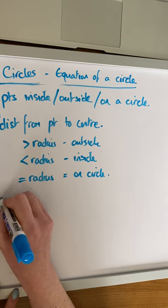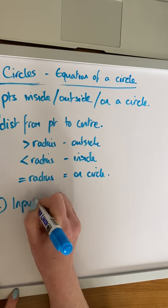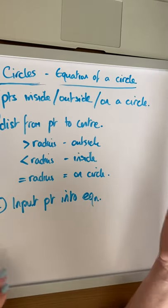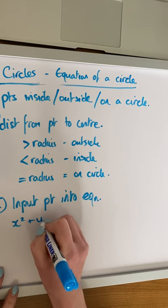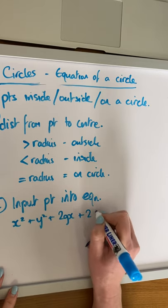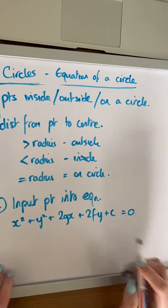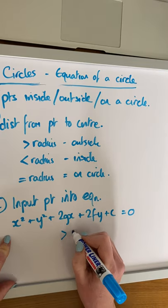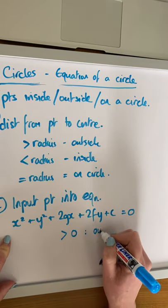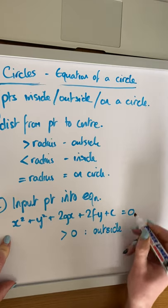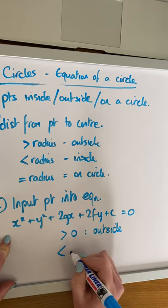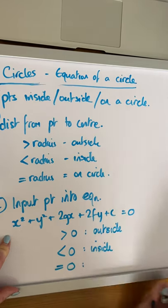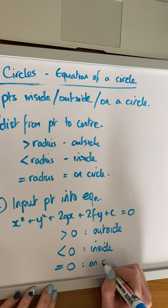Another way of looking at it is to input the point into the equation of the circle. The general equation is x squared plus y squared plus 2gx plus 2fy plus c equals 0. When you put the point into this equation, if you get an answer greater than 0, the point is outside the circle. If the answer is less than 0, the point is inside the circle. And if it equals 0, the point is on the circle.